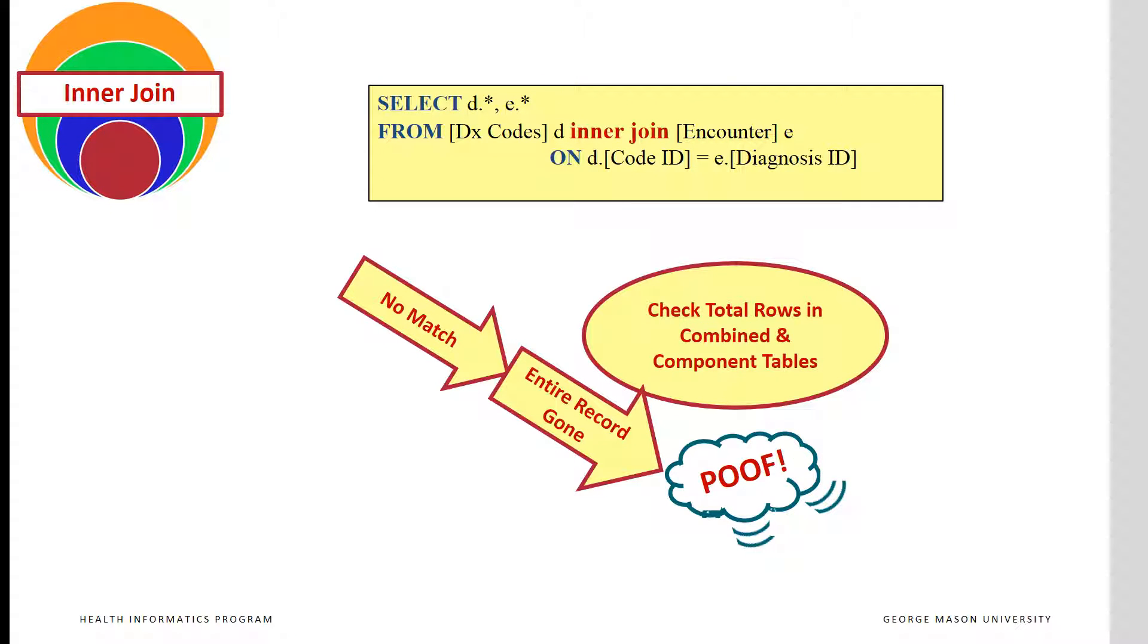Since the description of the diagnosis code is missing, all corresponding claims will also be deleted. Of course, this does not make sense. A whole lot of data can be deleted because the diagnosis has no description. Imagine what will happen if you are trying to send the bill for the encounter. To generate the bill, we need the description of the diagnosis. We will not have the description of the diagnosis in the combined table.